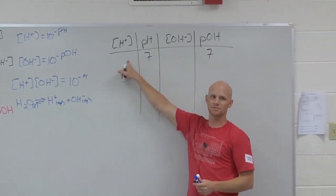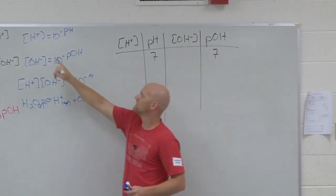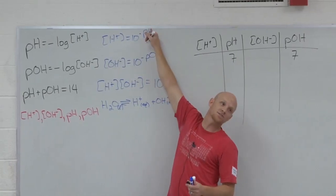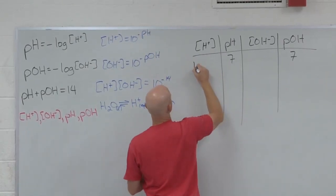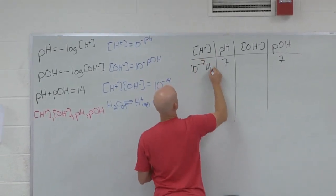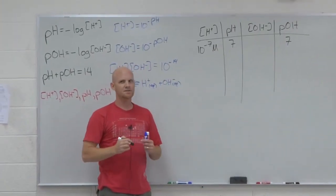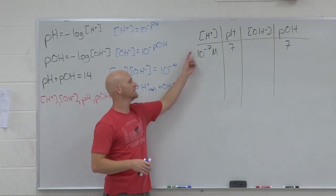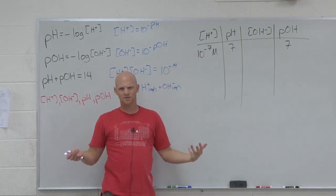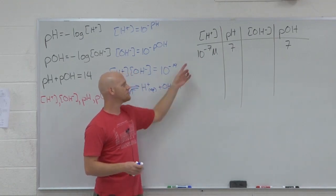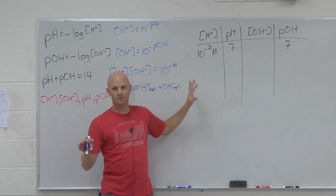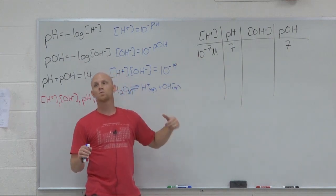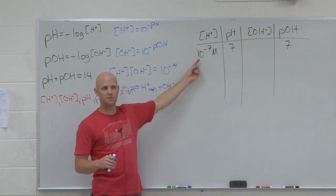What's the H plus concentration? 10 to the negative seven molar. Notice 10 to the negative seven is the same as one times 10 to the negative seven. So if you're putting that in your calculator, you'd put one times 10 to the negative seven, because anything times one is itself. So a lot of students make the mistake of putting ten times 10 to the negative seven. Don't do that. That's a different number.